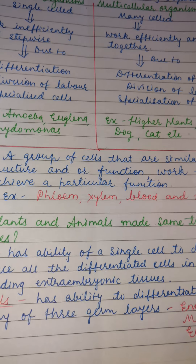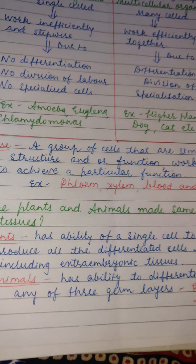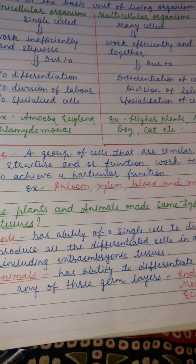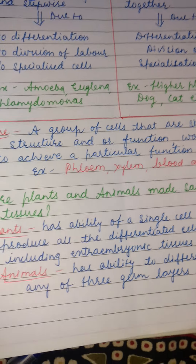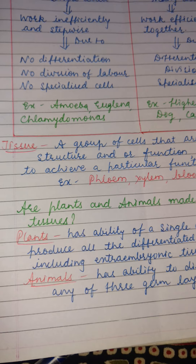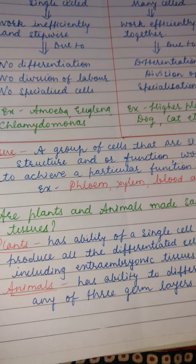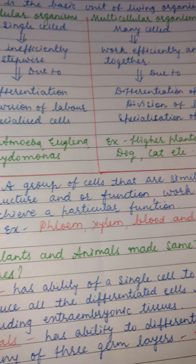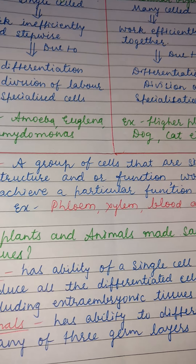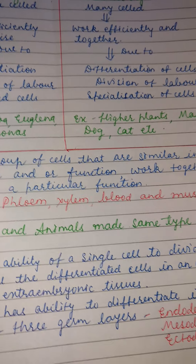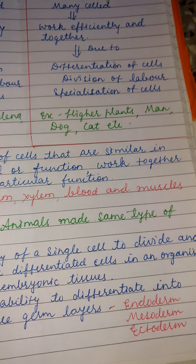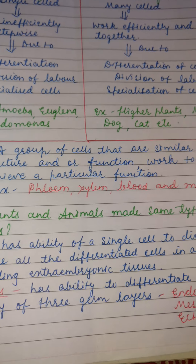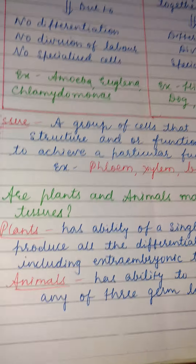Phloem and xylem are vascular tissues. Vascular means they can conduct — they have vessels. Xylem conducts water to different parts of the body, while phloem conducts food material to different parts of the body. These come under the complex type of permanent tissue, which we are going to see in the next part.